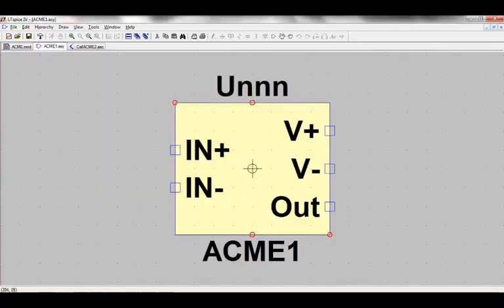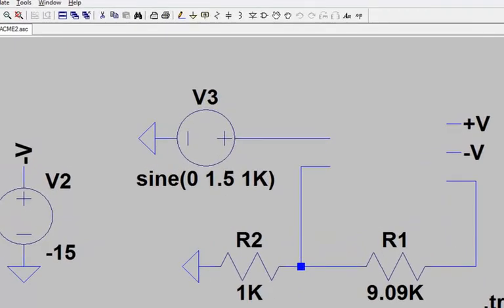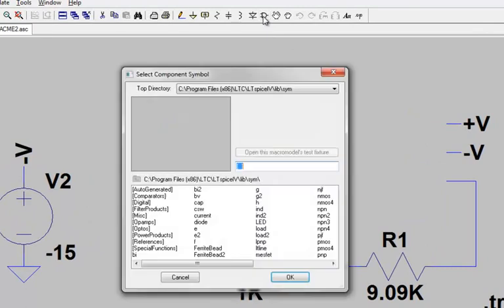If needed, you can further edit this symbol to best represent that dot subcircuit statement. This symbol and the associated dot subcircuit statement will be available under the component library, under Auto-Generated.